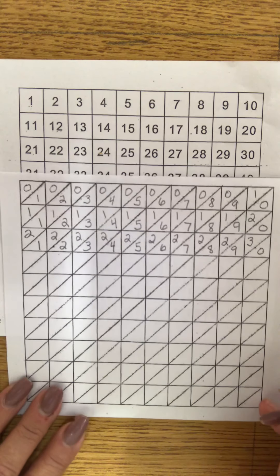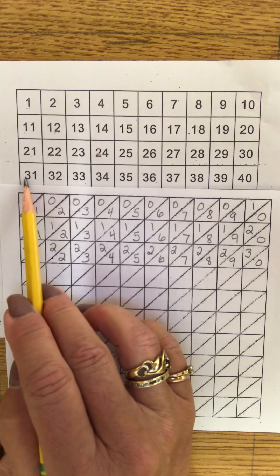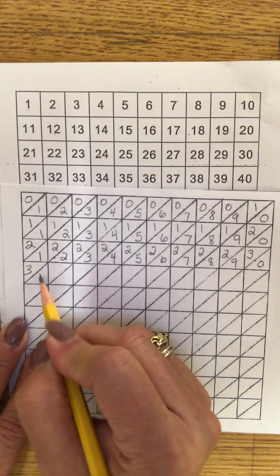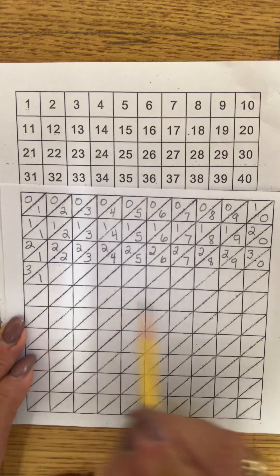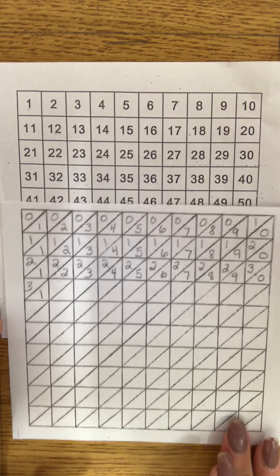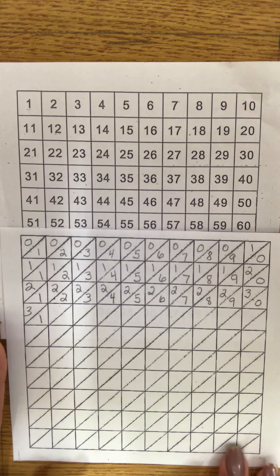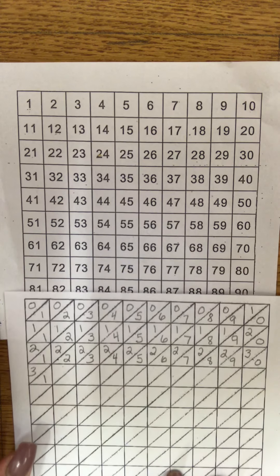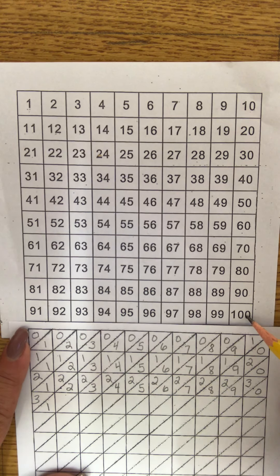Yes. 31, three tens plus one one. Three tens plus one one. And you're going to keep going. Follow the chart. Do all your 40s, 50s, 60s, 70s, 80s, and 90s, until you get all the way to 100.